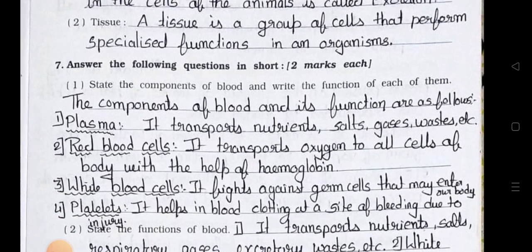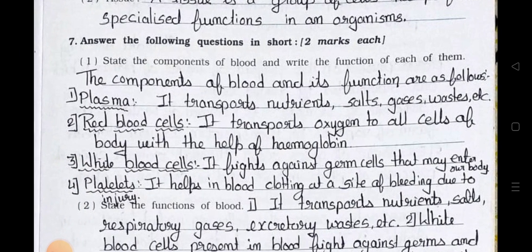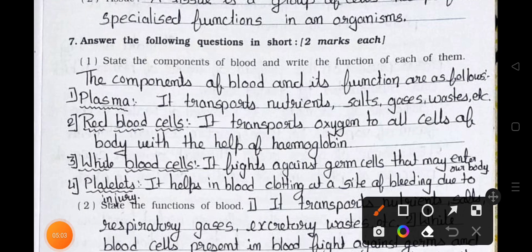Main 7: Answer the following questions in short, two marks each. Number 1: State the components of blood and write the function of each. Answer: Number 1 — Plasma: It transports nutrition, salts, gases, waste, etc. Number 2 — Red blood cells: It transports oxygen to all cells of the body with the help of hemoglobin.